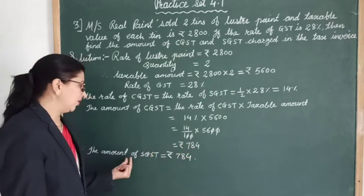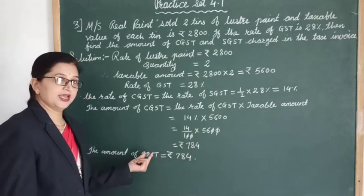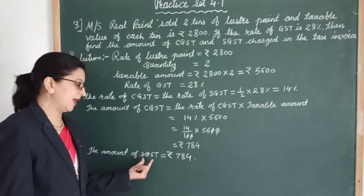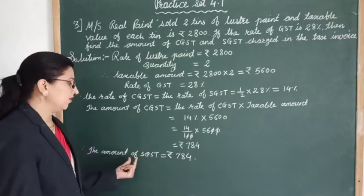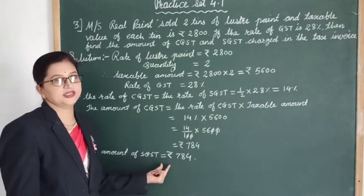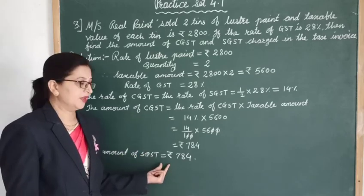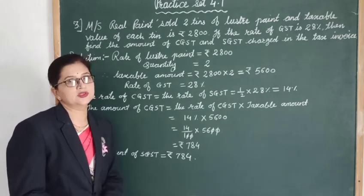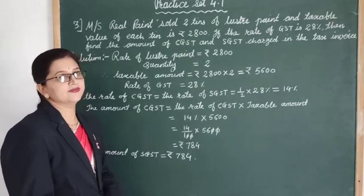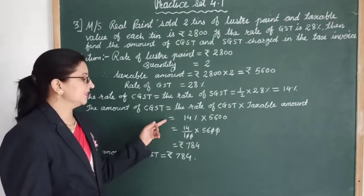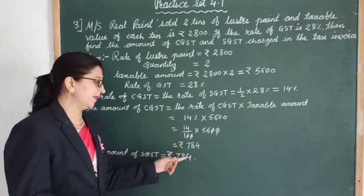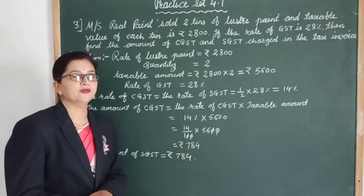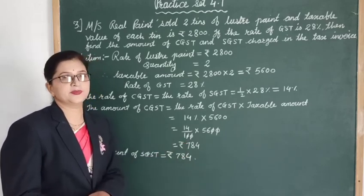The amount of SGST is also 784 rupees, since both are equal. So in the tax invoice, CGST and SGST amounts will be 784 rupees respectively.